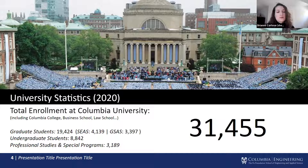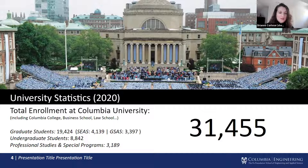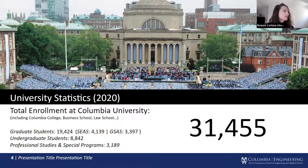Data science students will take statistics courses offered by the Department of Statistics, which resides in the Graduate School of Arts and Sciences. Arts and Sciences is informally known as the jewel in Columbia's crown, originally formed from three disciplines: political science, philosophy, and pure science in the late 1800s.